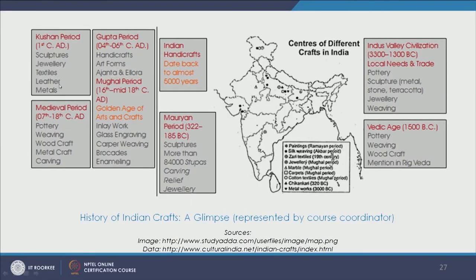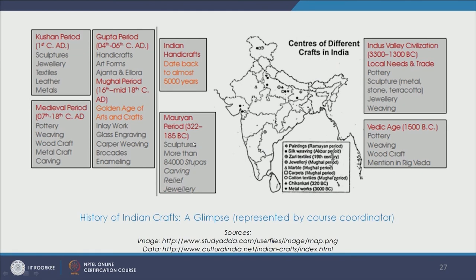Looking through our history, there is a lot of mention of varied craft forms. In the Kushan period there is mention of sculptures, jewellery, leather, and metal work. The medieval period saw pottery, weaving, and a lot of metal craft. The Gupta period came to be known as the golden age of arts and crafts — with handicrafts, varied forms of paintings, inlay work, glass engraving, and enamelling. The Mauryan period saw another range of craft forms including sculptures — more than 84,000 stupas were built — with carving and relief work. The Indus Valley civilization had pottery, sculpture, stone, terracotta, and jewellery. The Vedic age had another set of craft forms. This gives us a glimpse that India has been very rich in varied craft forms.